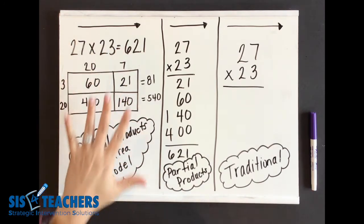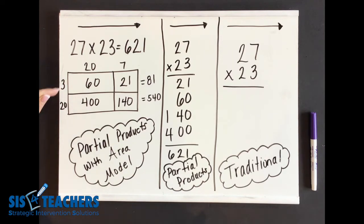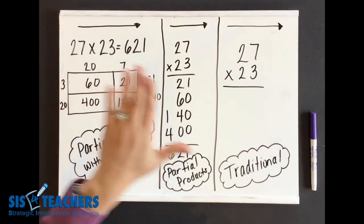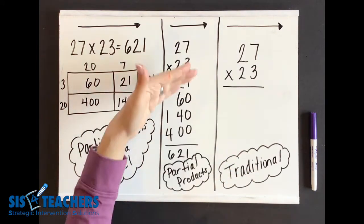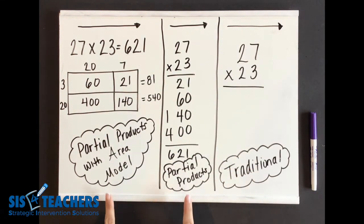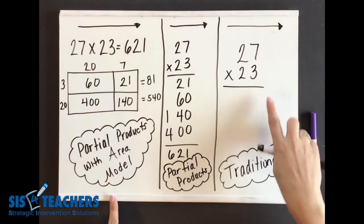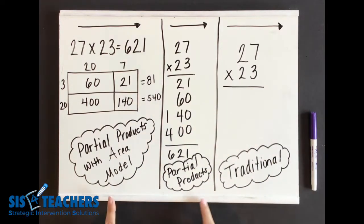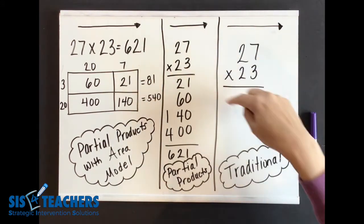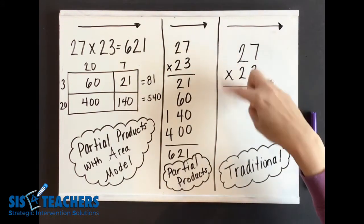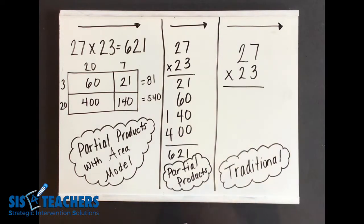In the partial products with the area model, some of you may be wondering why I flipped these two numbers. In the previous video, we made the connection to what partial products look like. Some students might need to use these two ways before you're ready to go to the traditional. The most important part is that you have the number sense that connects what we're doing. We're going to look now at this traditional method. How are we going to go about doing it?